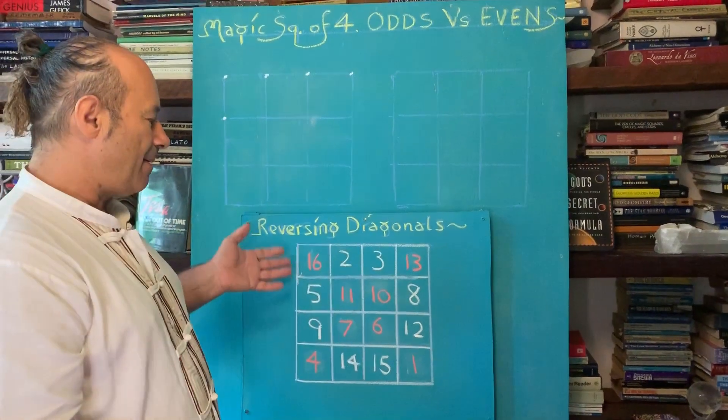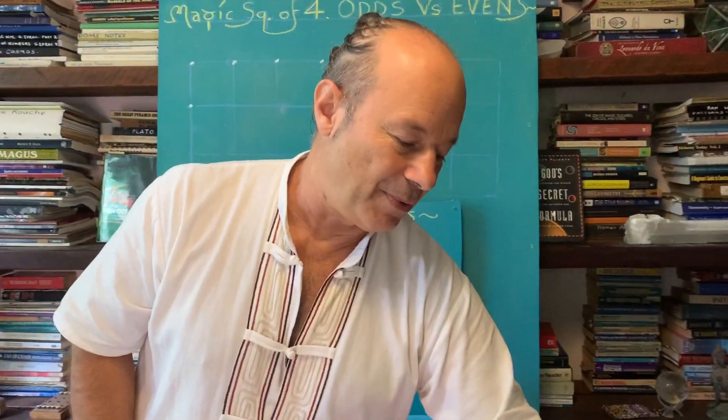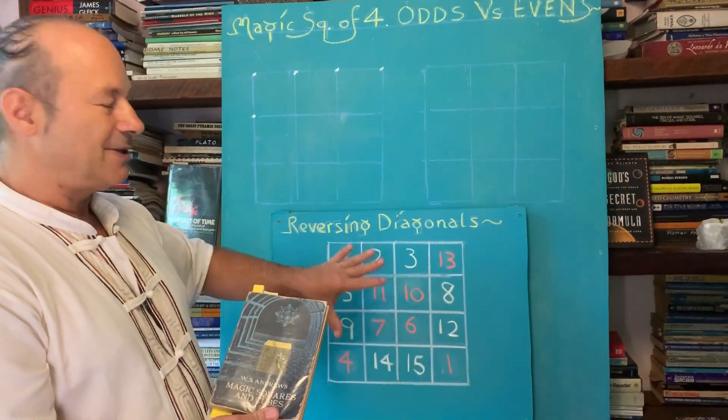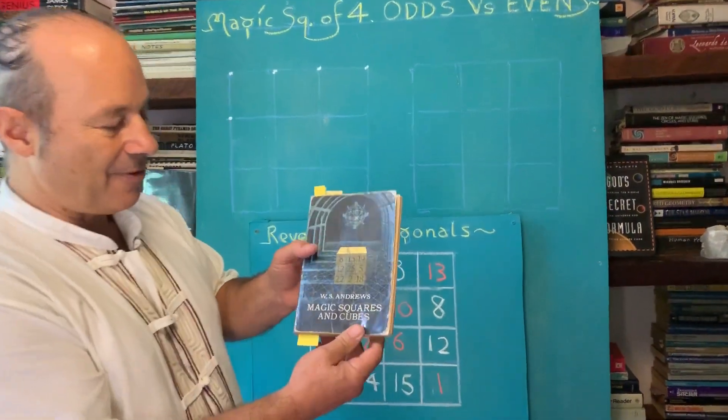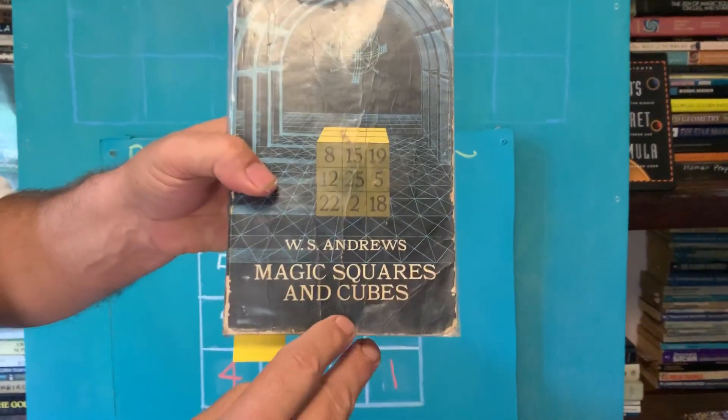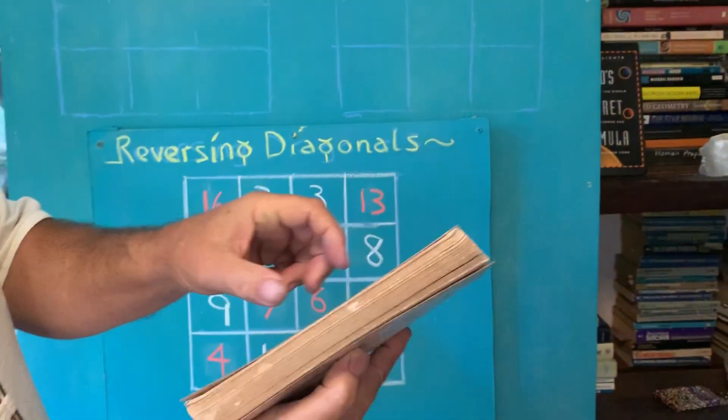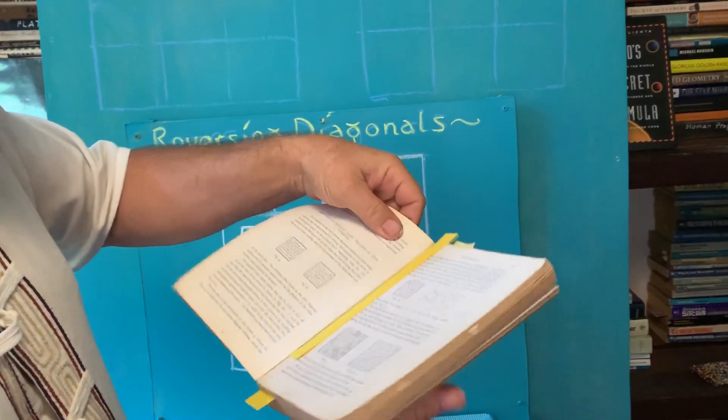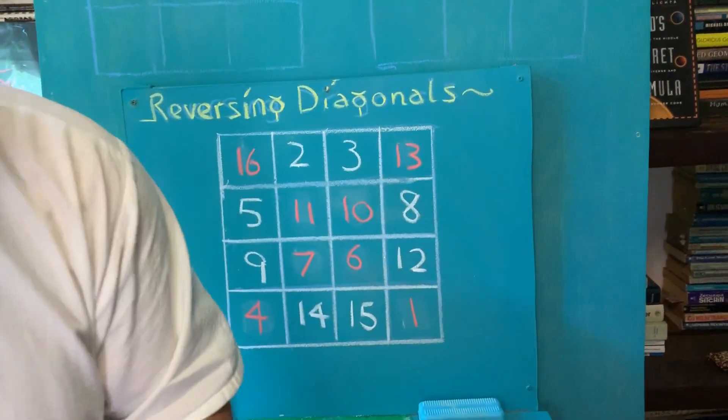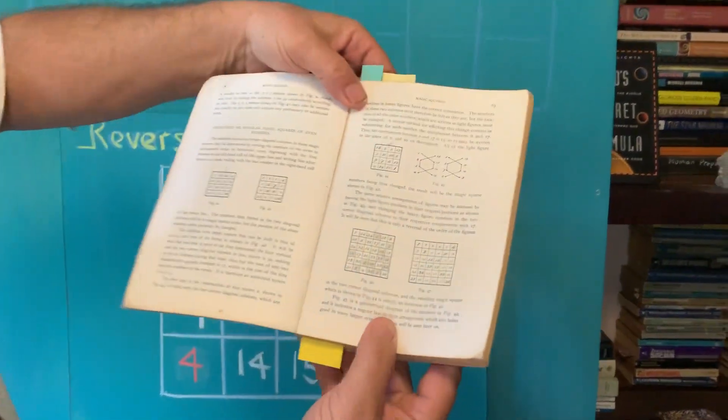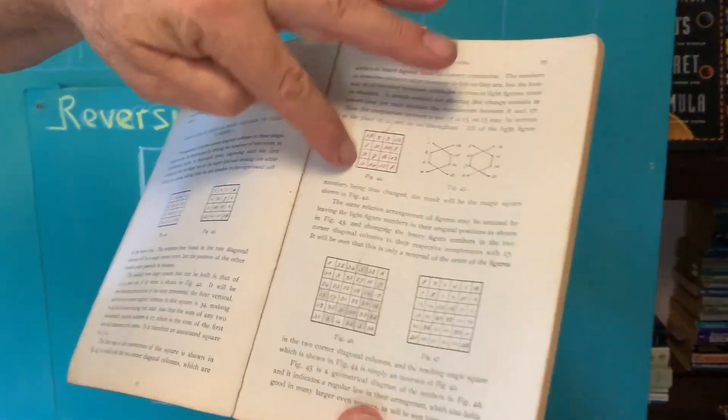This magic square, 4x4, appeared in a book from 1917. So 100 years ago, the book that launched me into magic squares came from this book here called Magic Squares and Cubes by W.S. Andrews. And this was kind of like my Bible. I'll just show you a few things. You can see here, there's the magic square that we're working with here.